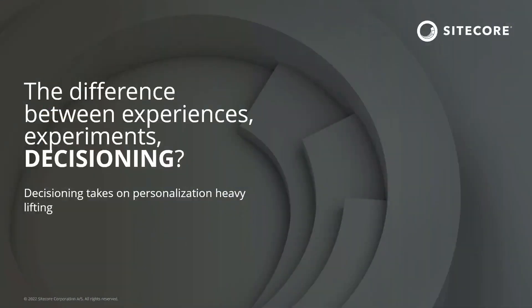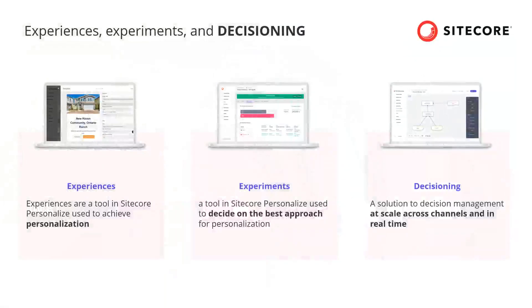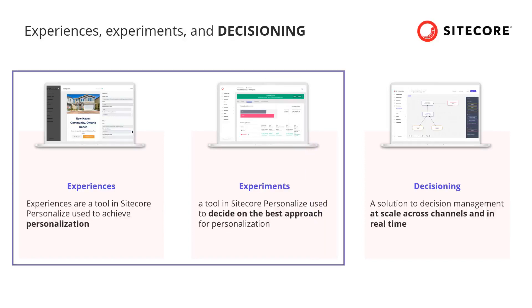We mentioned that decisioning is an advanced way of personalization — so how is it different from both experiences and experiments? We talked in previous episodes about different types of experiences and experiments. Both experiences and experiments have streamlined capabilities to deliver personalization, and they can handle custom and quite complicated personalization and A/B testing scenarios.